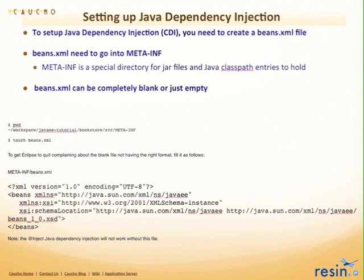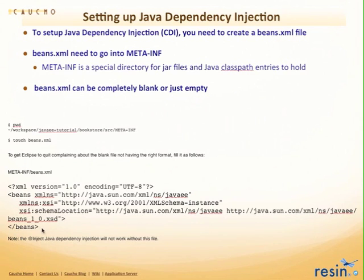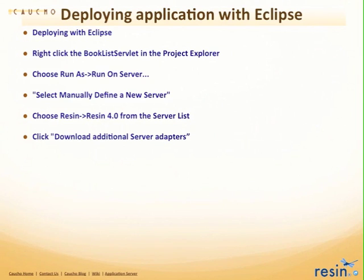To get the @Inject annotation working — so the repository object gets injected into the servlet — we need to create a beans.xml file. It can be essentially empty with just the beans element tag. The reason not to leave it completely blank is that Eclipse complains about malformed XML. It's just easier to provide a minimal XML file; you can cut and paste this right off the wiki.